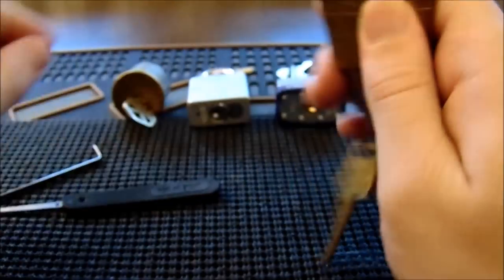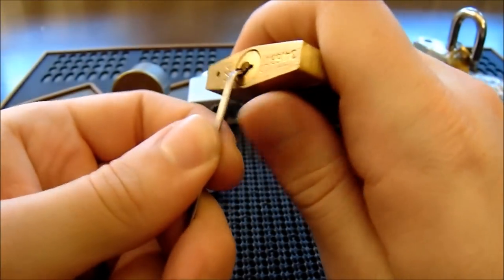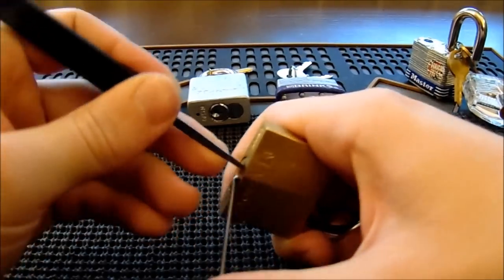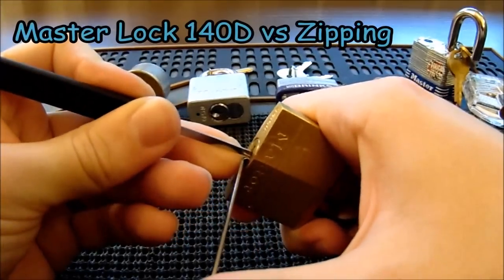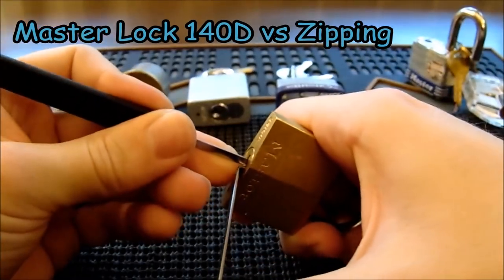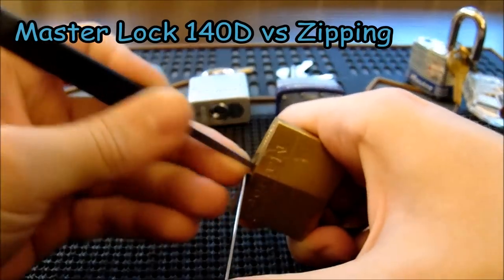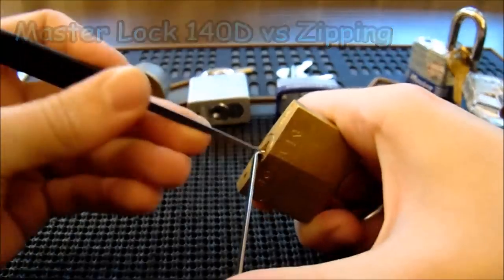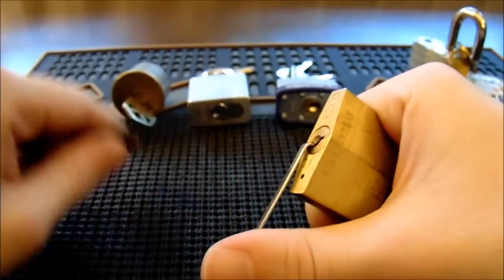And here's the bitting on this key, nothing too serious. So I'm going to do light bottom of the keyway tension, going to put my hook right in the back and just give it a quick zip. I'm going to reset, and if you don't get it just keep on zipping until you do essentially, and now it's open.